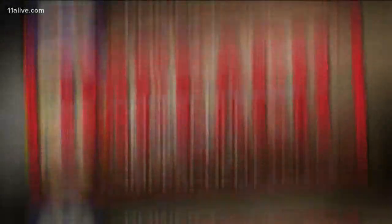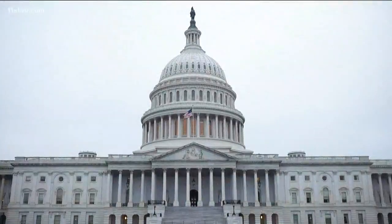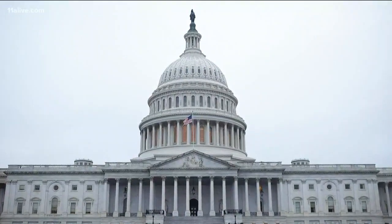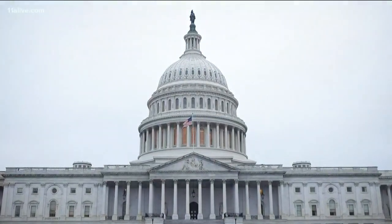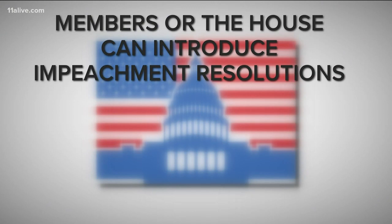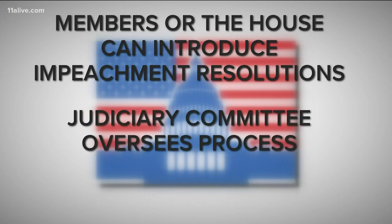But how does it start? The House must first bring impeachment charges as part of their oversight and investigatory responsibilities. Individual members can introduce resolutions, or the House can pass a resolution authorizing an inquiry. The Judiciary Committee usually has jurisdiction over impeachments and would decide whether or not to pursue articles of impeachment and report to the full House.